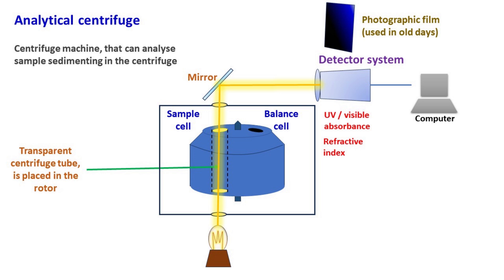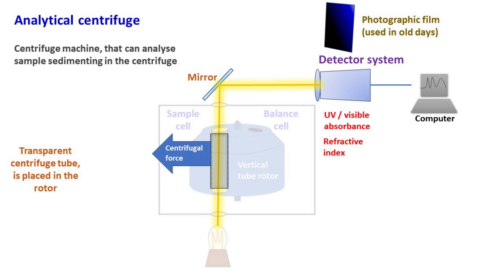The choice of detector system depends on the properties of the sample molecules that are to be separated. The detector is connected with a PC that shows the information in the form of a graph. Since we are using a vertical tube rotor, the sample gets separated across the diameter of the centrifuge tube.